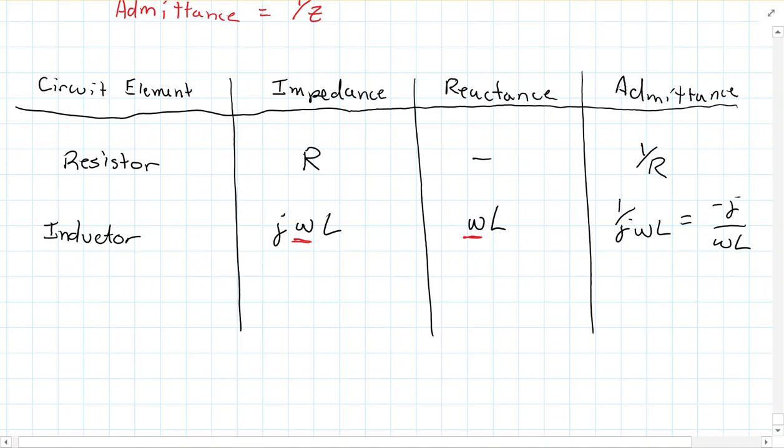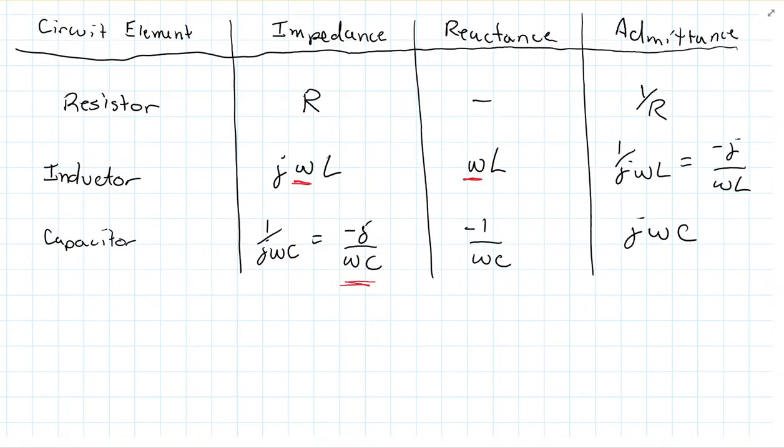And then we have the capacitor. And its impedance is 1 over jωC, which is the same thing as negative j over ωC. We'll use both formulas, so it's important to remember both. The reactance, though, really you need to use this one here when you're looking for what the reactance is. So, it's negative 1 over ωC. And then the admittance would just be jωC.